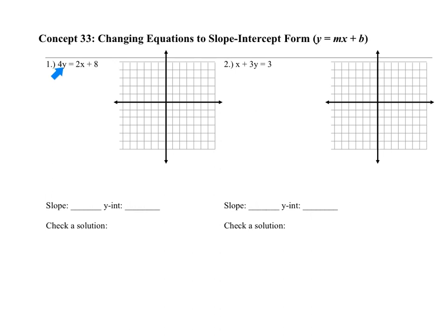You get the y alone by canceling out the multiplication of 4 by dividing both sides by 4. On the left-hand side it cancels out and you have y equals. Both terms are being divided by 4, so 2x over 4 is like 2 fourths x, which reduces to 1 half. So it becomes y = ½x, and 8 divided by 4 is 2, giving y = ½x + 2.